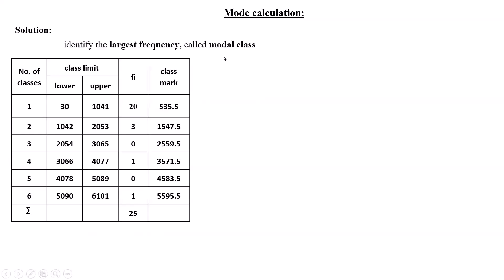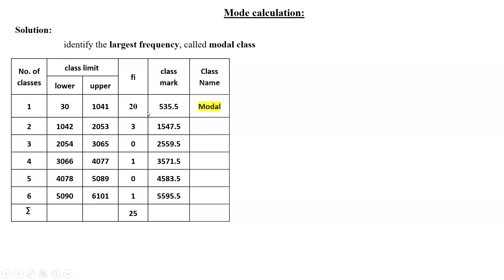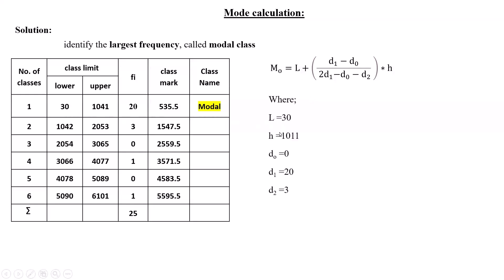The largest frequency is 20, so the first class (30 to 1041) is the modal class. L = 30, h = 1041 − 30 = 1011, d0 = 0 (no preceding class), d1 = 20, d2 = 3 (frequency of the class after the modal class). Substituting into the formula gives a mode of 576.486.